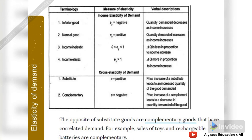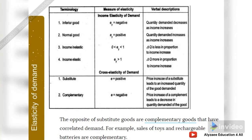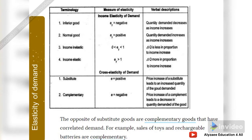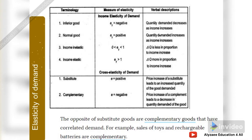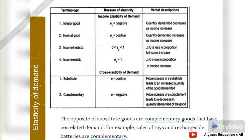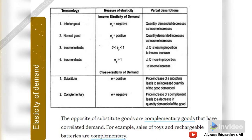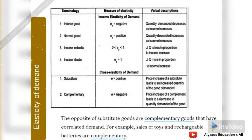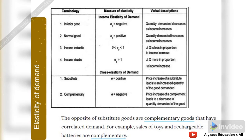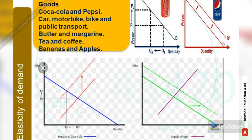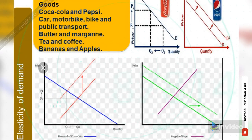For example, the sales of toys are dependent on rechargeable cells — rechargeable cells are complementary to toys. Tires are complementary to bikes and to cars. For a vehicle, mobile oil and petrol are complementary — without them you can't run it. These are the basic concepts illustrated in this slide.